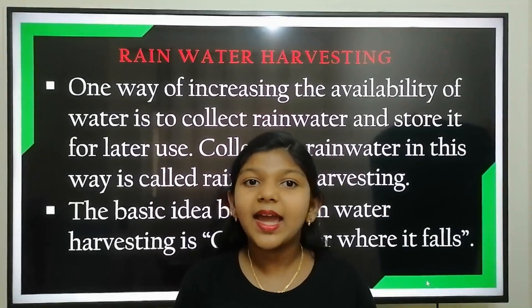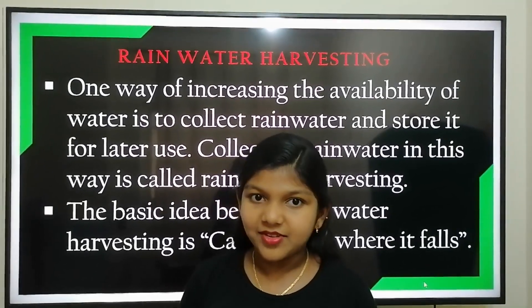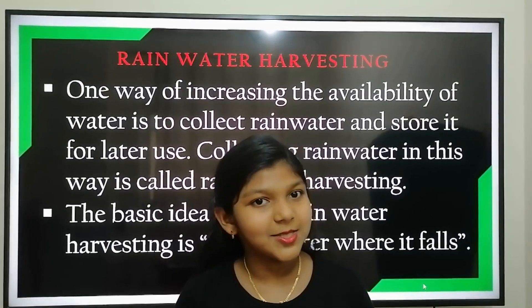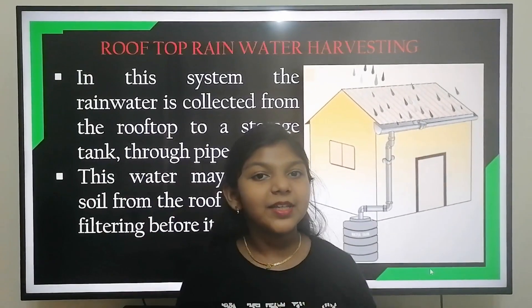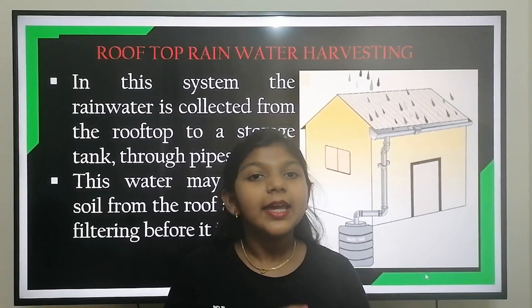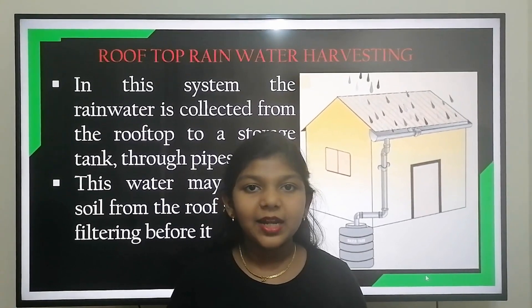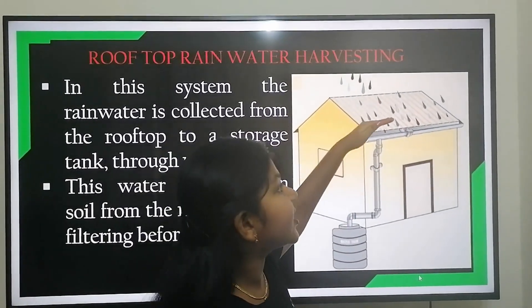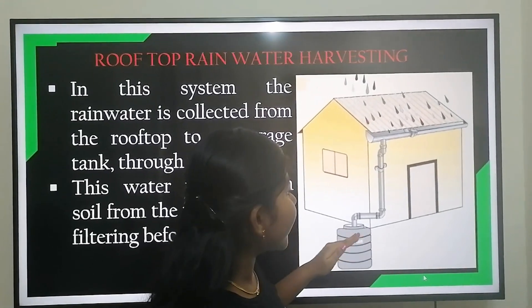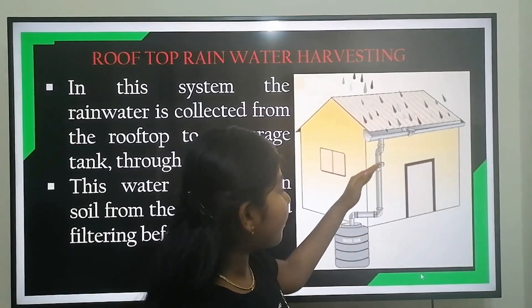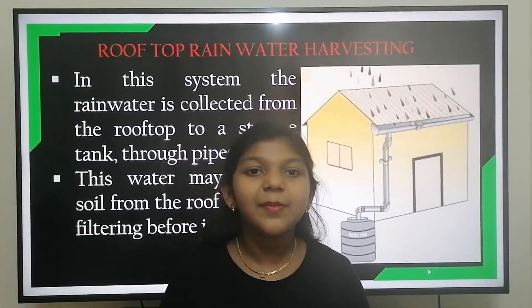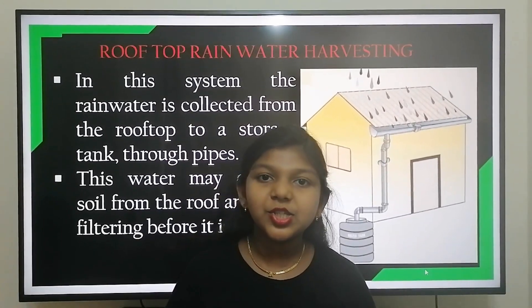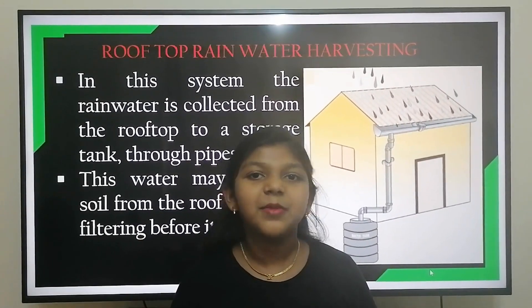The basic idea behind rainwater harvesting is to catch water where it falls. Let's see the methods of rainwater harvesting. In a rooftop rainwater harvesting system, the rainwater is collected from the rooftop to a storage tank through pipes. This water may contain soil and other impurities, so it should be filtered before use.